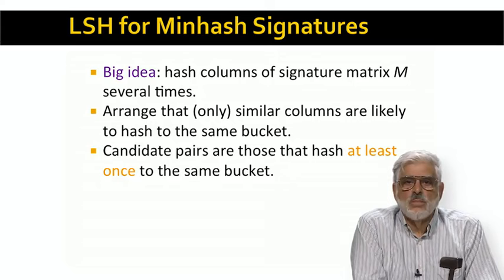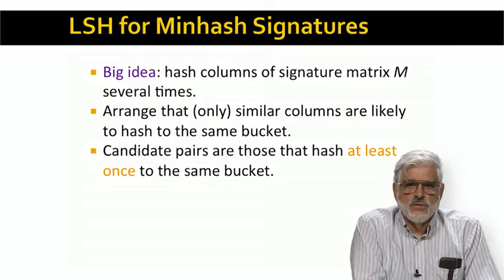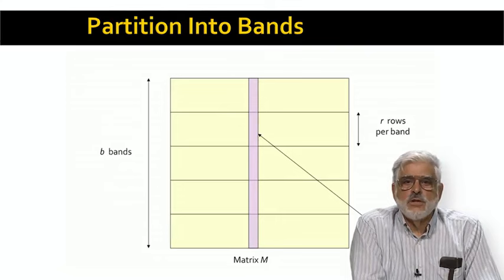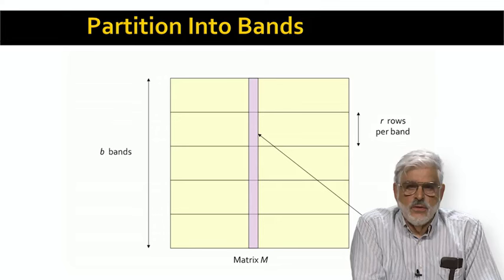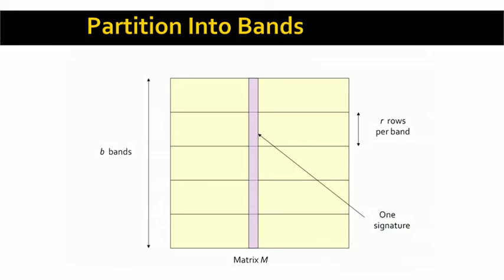We need to create hash functions and use each to hash the columns of signature matrix M into buckets. We need a trick to ensure that similar signatures are much more likely to hash to the same bucket than dissimilar ones. We regard a pair of signatures as a candidate pair if even one of the hash functions puts them in the same bucket. The yellow area is the signature matrix M — each column corresponds to one signature, and each row is one component created by applying a minhash function to each underlying set.